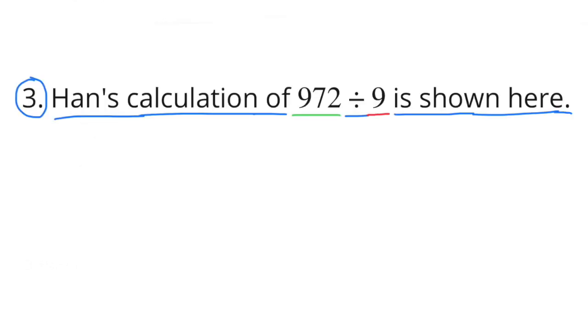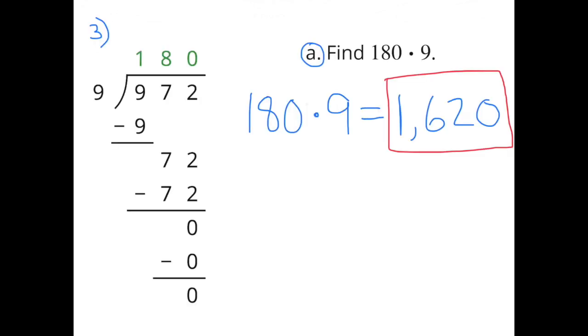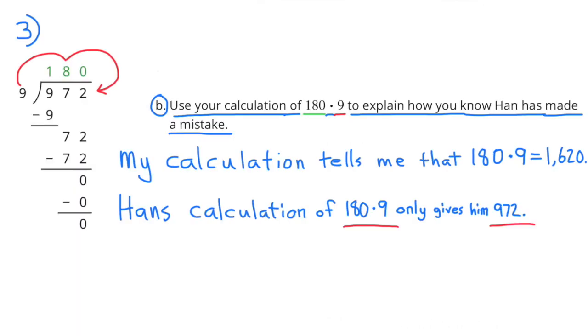Number 3. Han's calculation of 972 divided by 9 is shown here. A, Find 180 times 9. 180 times 9 is 1,620. B, Use your calculation of 180 times 9 to explain how you know that Han has made a mistake. My calculation tells me that 180 times 9 equals 1,620. Han's calculation of 180 times 9 only gives him 972.